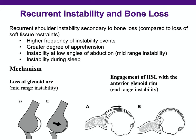Instability associated with bone loss has characteristic features compared to instability without bone loss. There is higher frequency of instability events, greater degree of apprehension, and instability at low angles of abduction or during sleep — not typically seen with just soft tissue injuries. Two mechanisms explain this pattern: loss of glenoid arc causing mid-range instability, and engagement of the Hill-Sax lesion with the anterior glenoid rim at end-range abduction and external rotation.